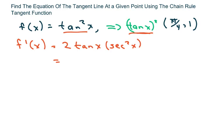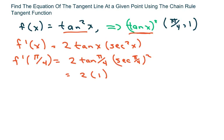So we get that, and then we're going to evaluate at pi over 4. So we get 2 tan of pi over 4 times secant of pi over 4 squared. And that's just going to give you 2 times 1 times 2, and that equals 4.